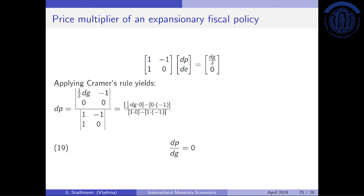Applying Cramer's rule, we compute the determinant of the modified coefficient matrix and divide by the determinant of the unchanged coefficient matrix. Multiplying along the main diagonal: (1/delta·dg)×0 minus 0×(−1), divided by the determinant of the unchanged matrix: 1×0 minus 1×(−1). Dividing through by dg gives dp/dg = 0. This indicates that an increase in government spending does not affect goods prices — they remain constant — confirming our graphical analysis.